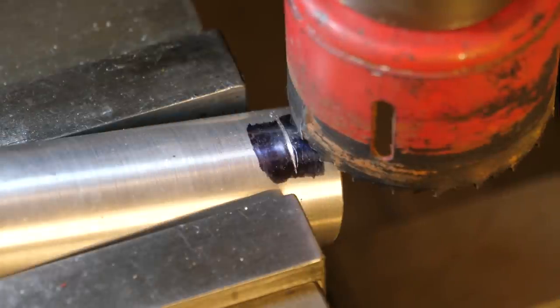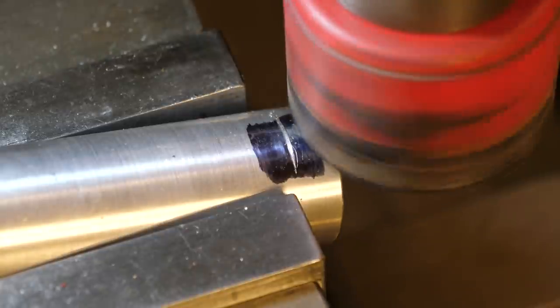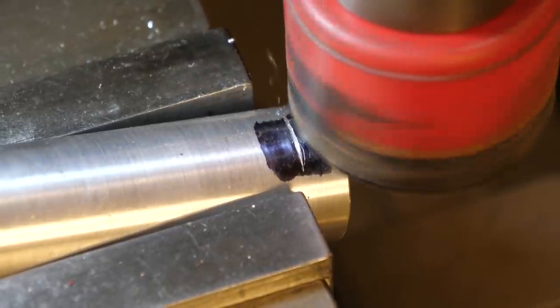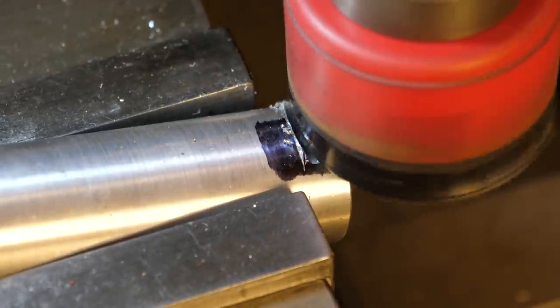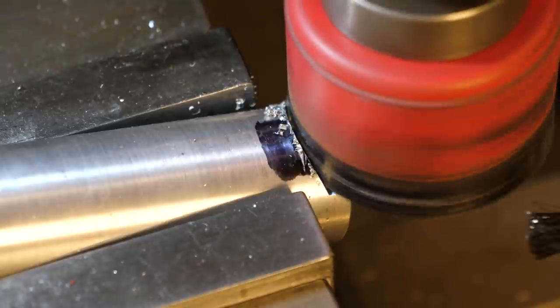A hole saw is placed in the mill and centered on the part. The cut is started off the mark and the mill machine table is moved to bring the cut to the line. Now the plunge cut is made with the hole saw.